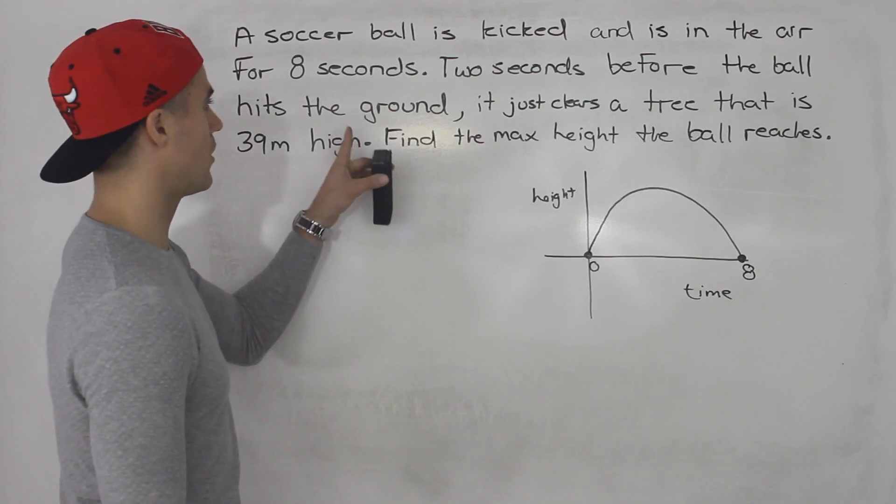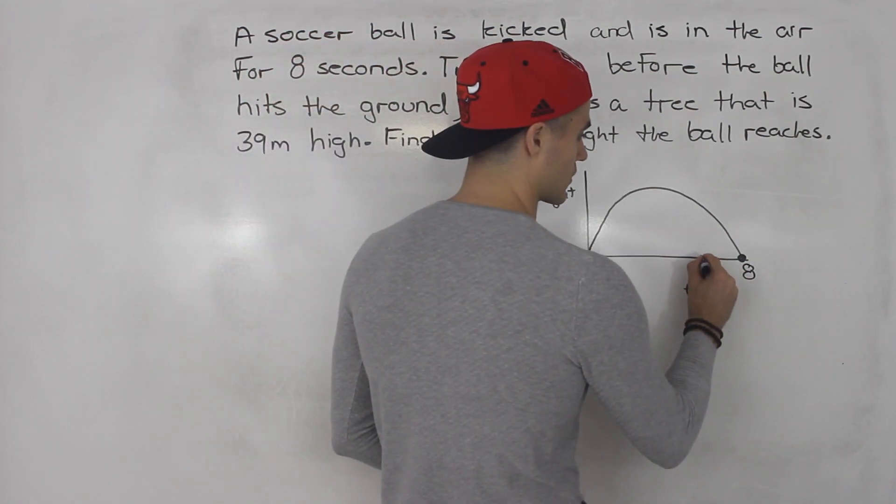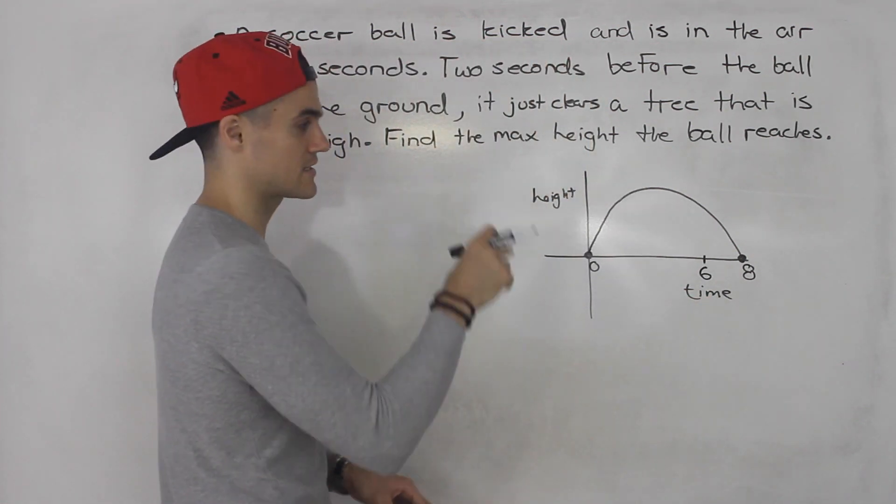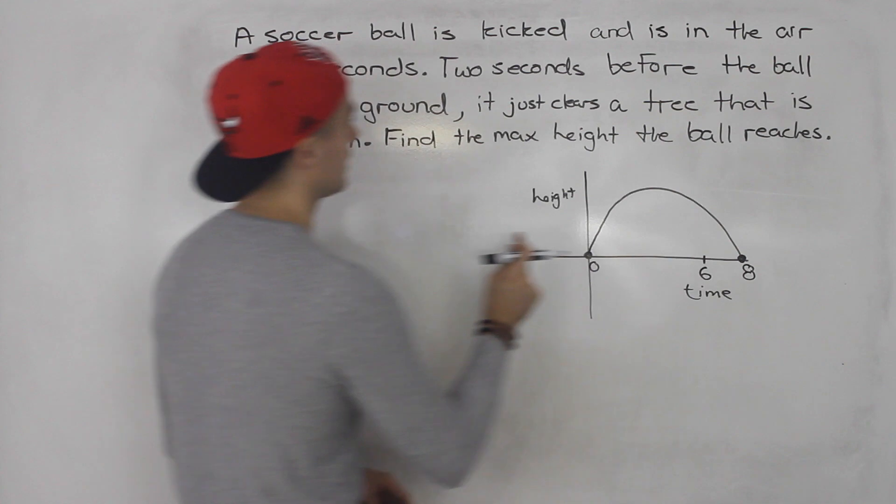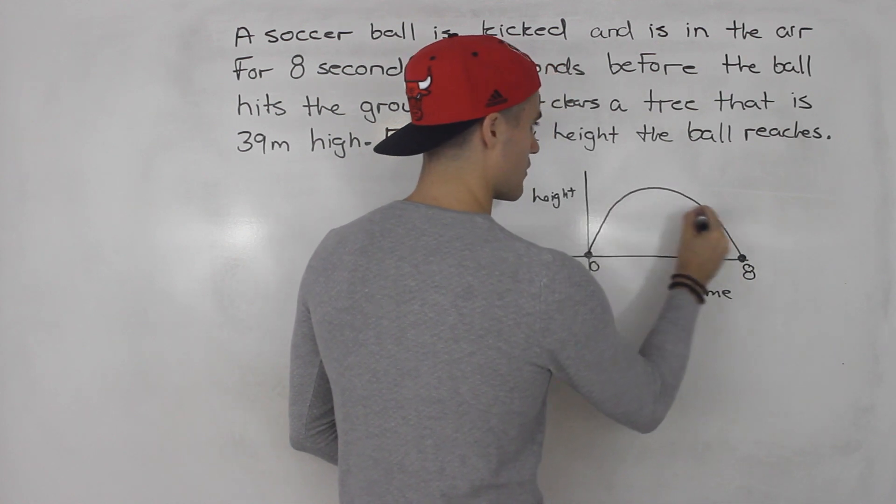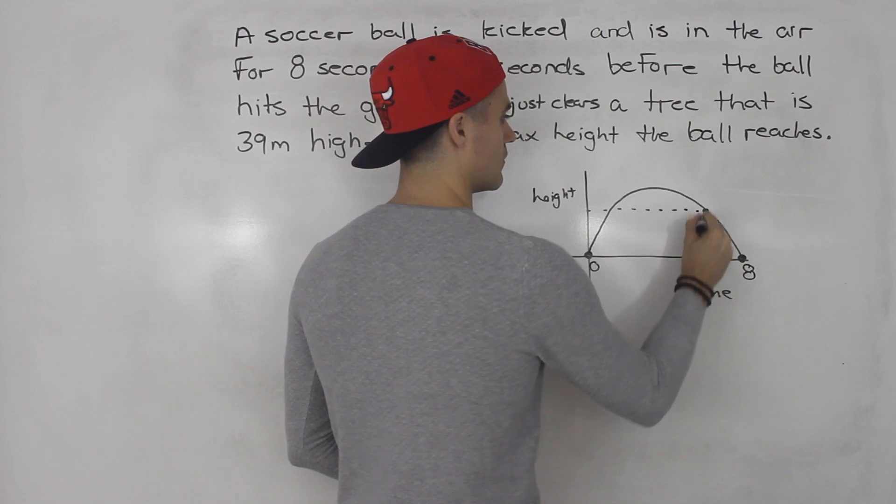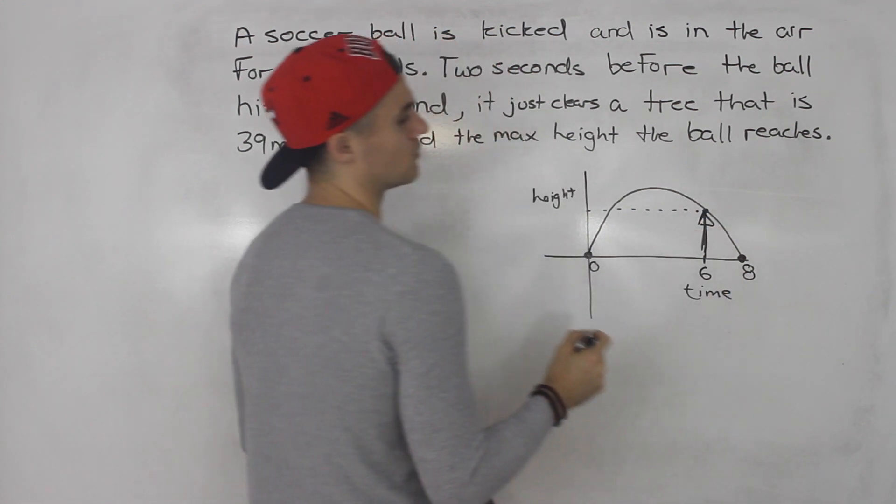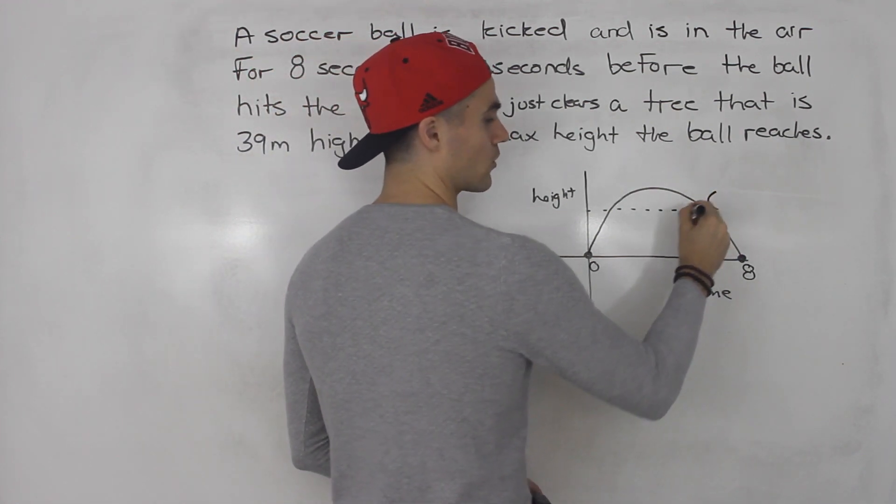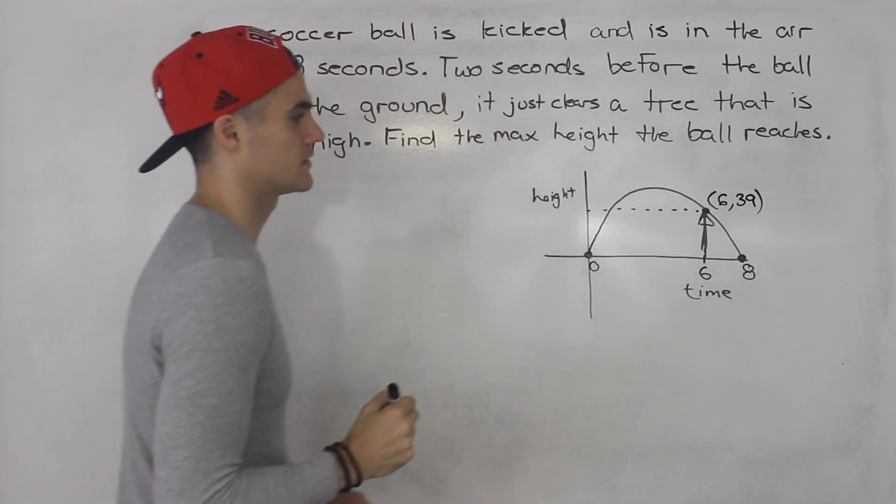Now we're told two seconds before the ball hits the ground. So two seconds before it hits the ground, where is that? That's over here. So at six seconds, at the six second mark when it's in the air, two seconds before it hits the ground, it just clears a tree that is 39 meters high. So here, the height of that point, so there's like a tree here, right? So that tree is 39 meters high. So the coordinate of this point or the top of the tree is 6 and 39, like that.